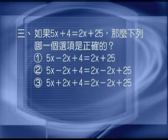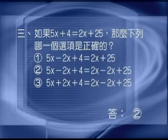第三题：如果5X加4等于2X加25，那么下列哪一个选项是正确的？5X减2X加4等于2X减2X加25。答案二。